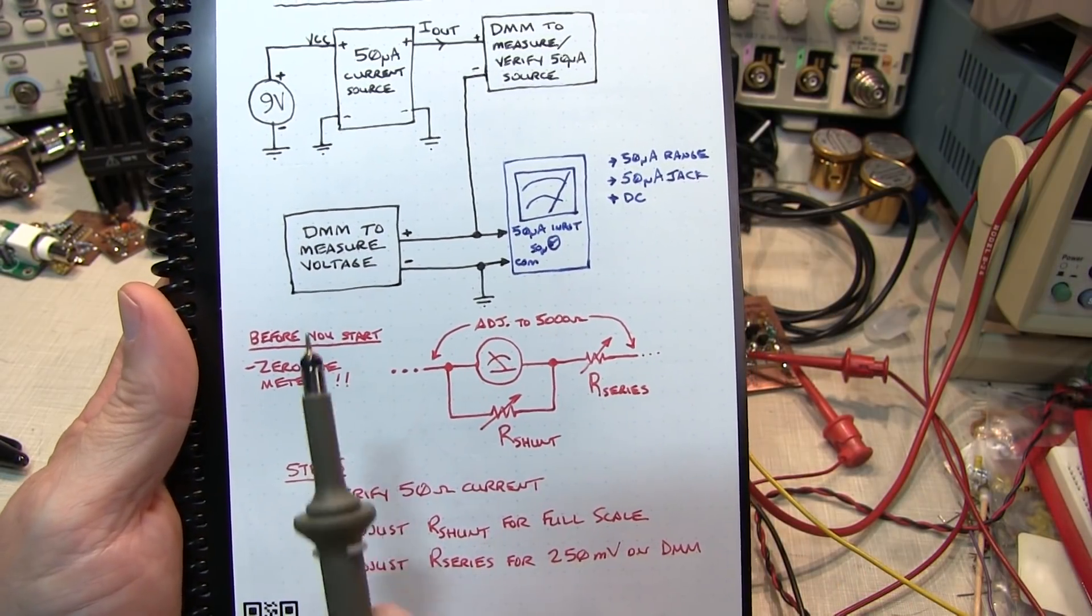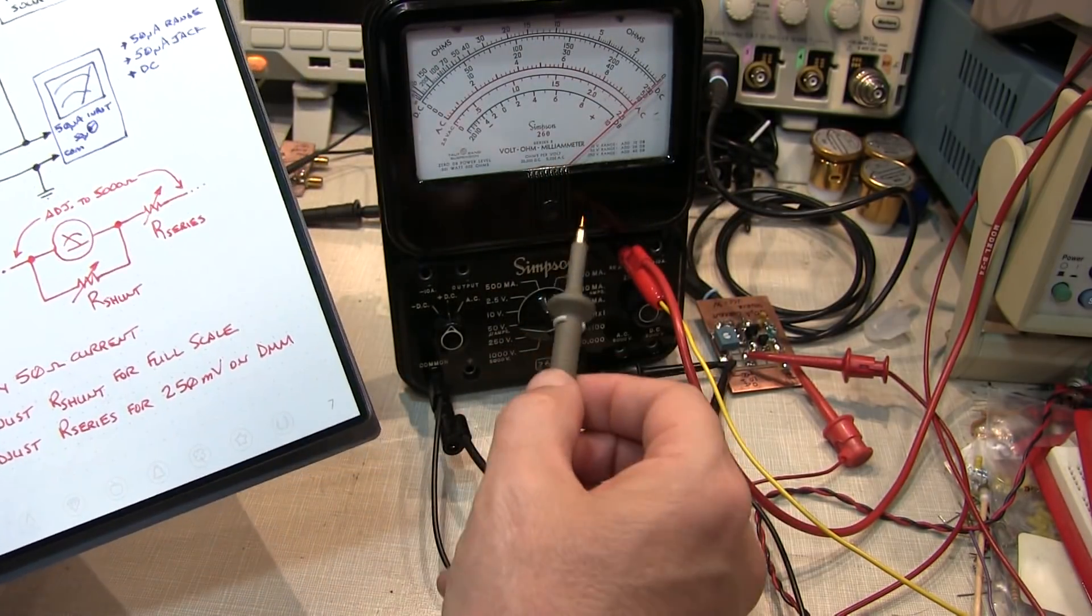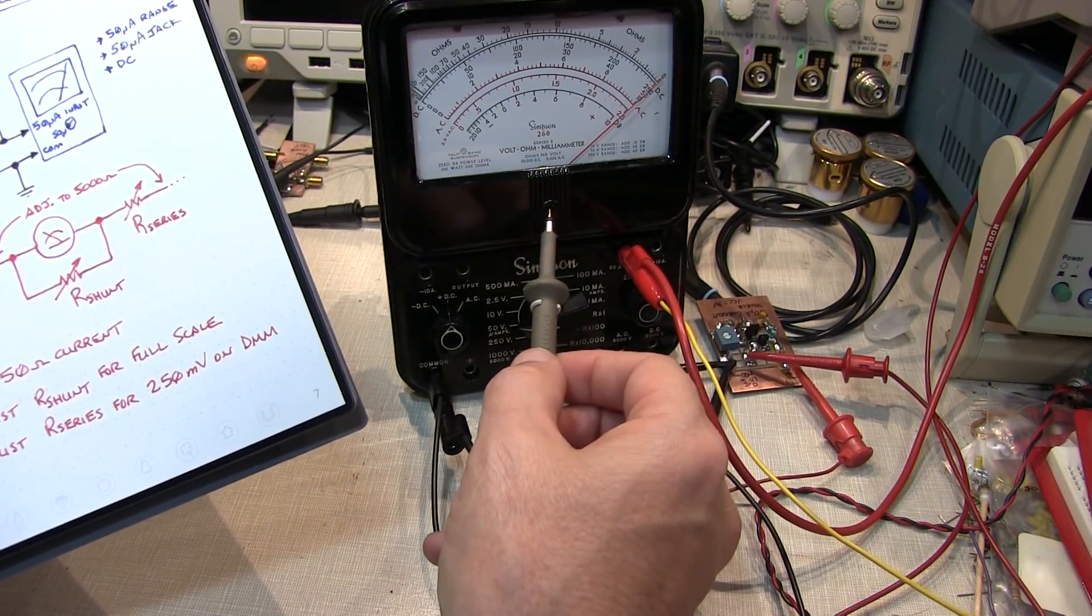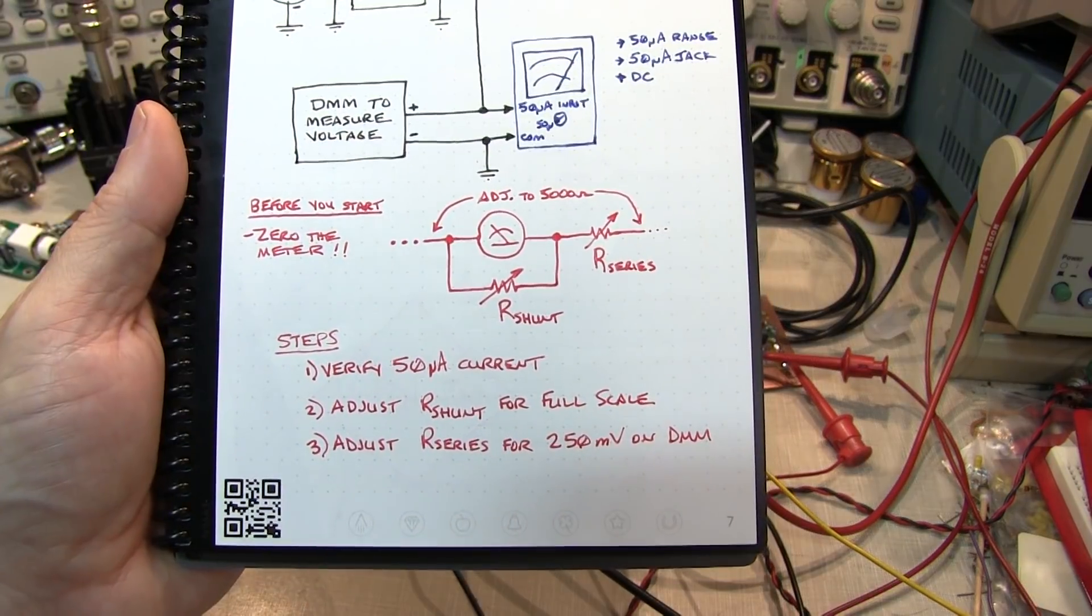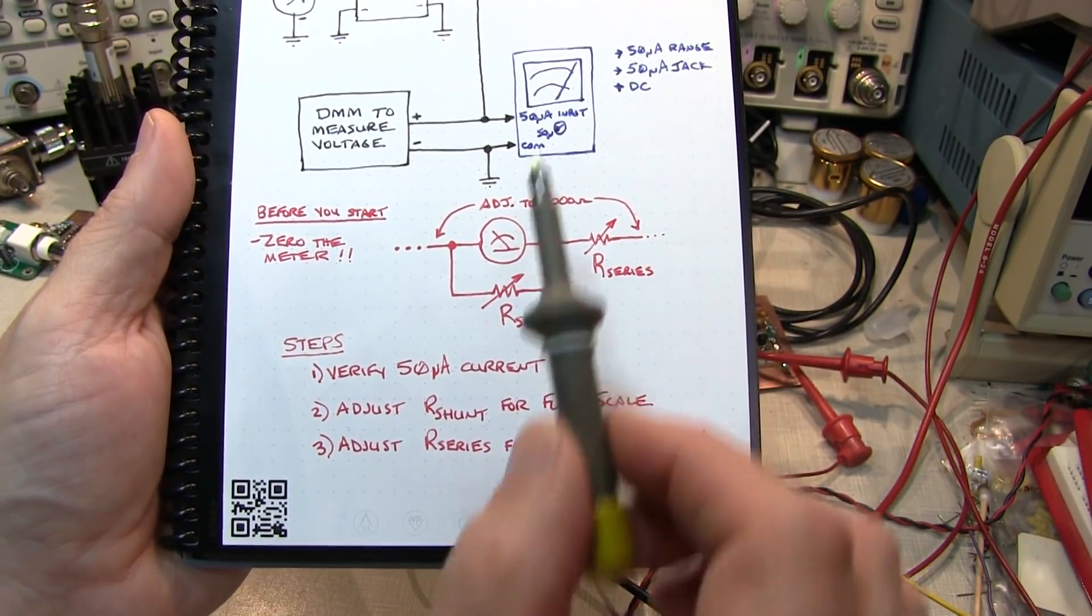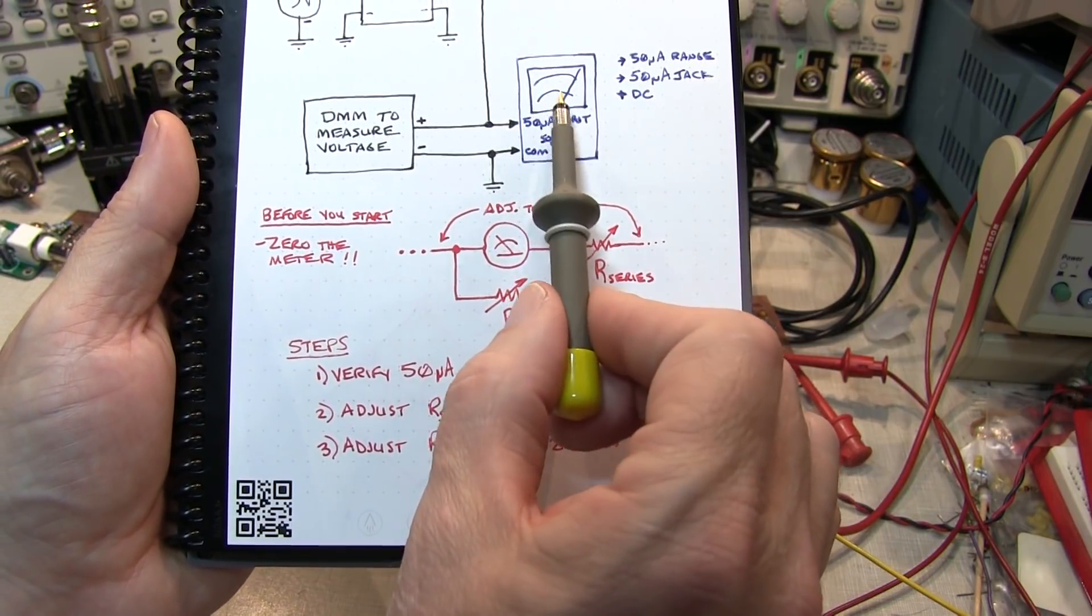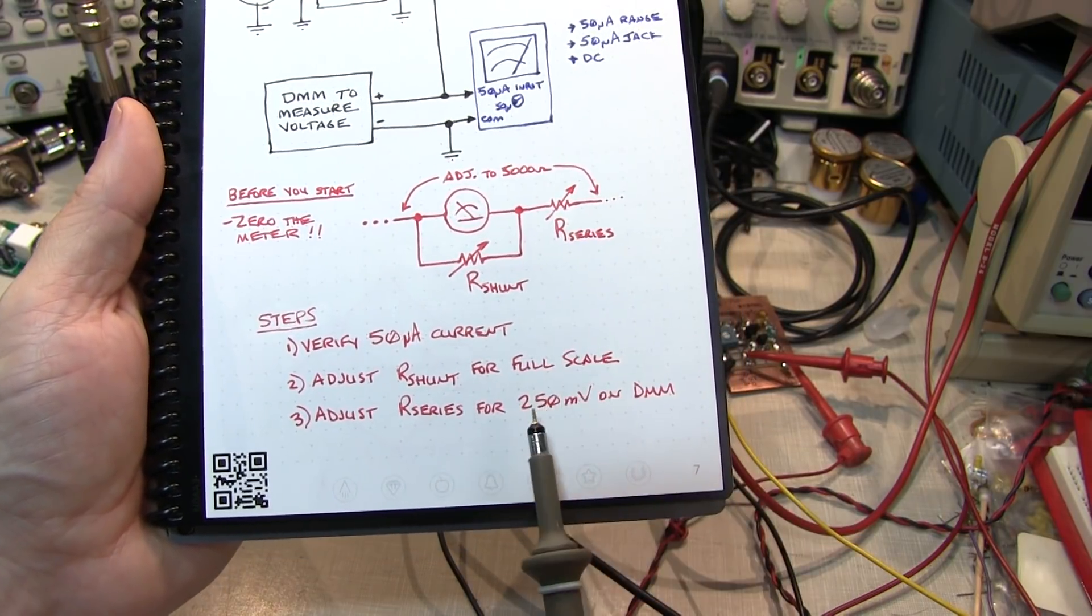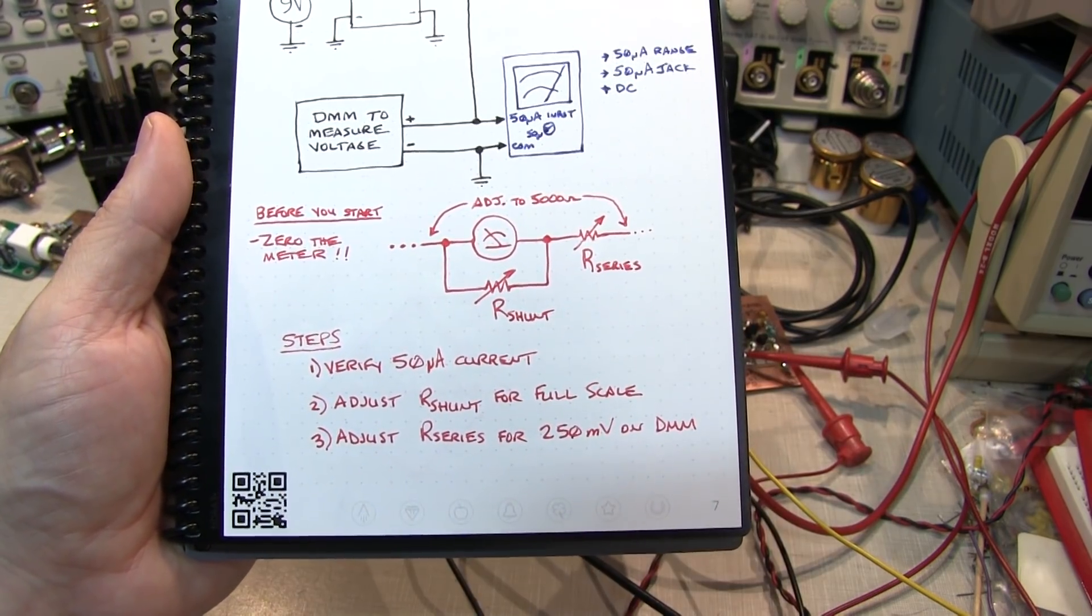Before you do anything, you want to ensure you zero the meter. Lay the meter down with nothing connected and adjust the mechanical adjustment screw to ensure the pointer is exactly on zero. Then the process is simple. Verify you've got 50 microamp current flowing. Adjust the shunt resistor to get a full-scale reading on the 260's meter. Then adjust the series resistor to get 250 millivolt drop on the DMM at that 50 microamp test current.